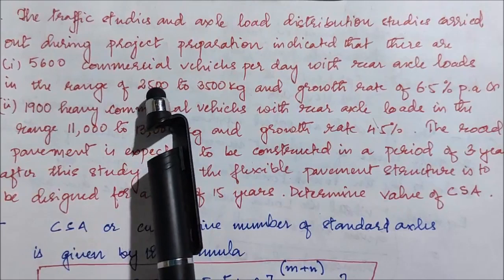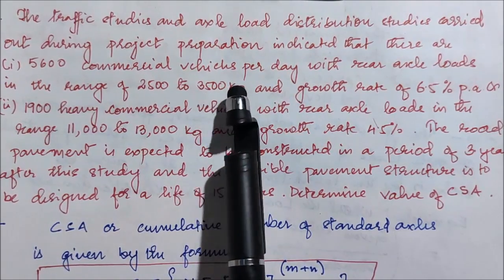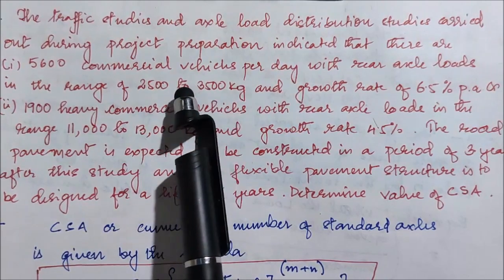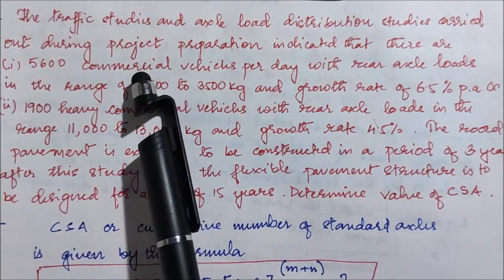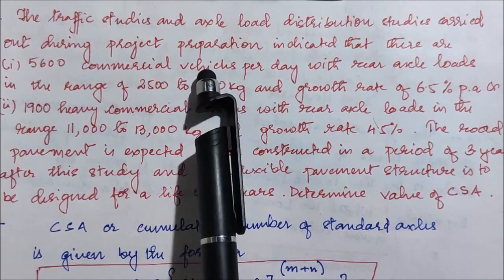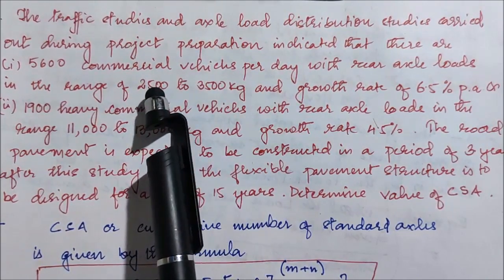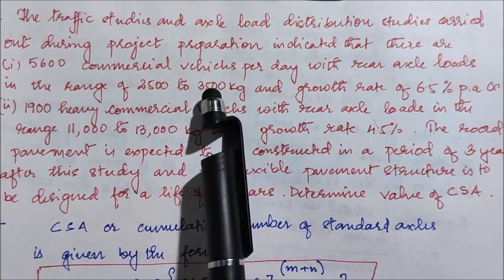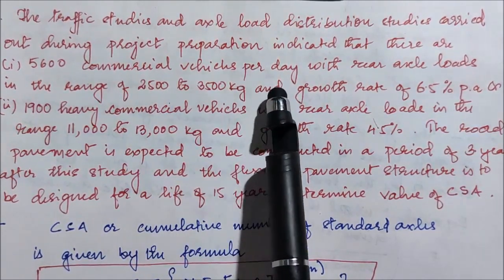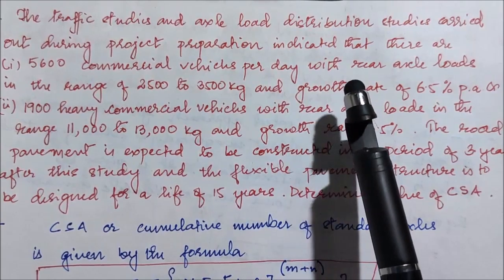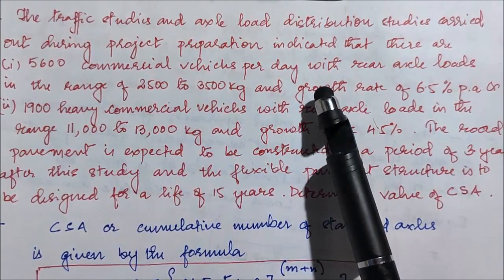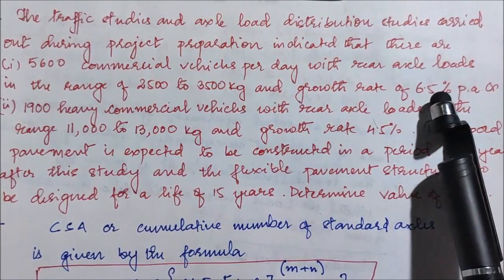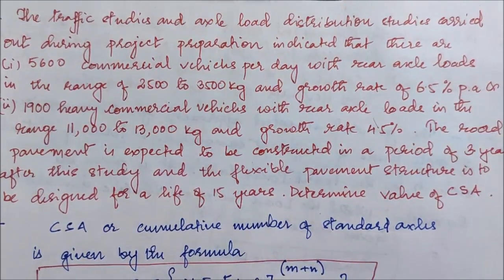The load for the rear axle for these vehicles is given in the range of 2500 to 3500 kg. The loads are given in a range because there will be a varied number of commercial vehicles. The rate of growth of the vehicles is 6.5 percent per annum.